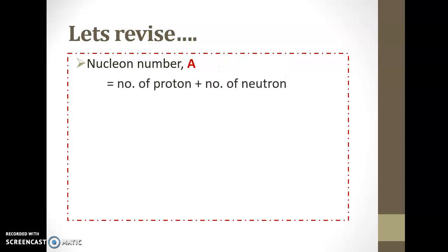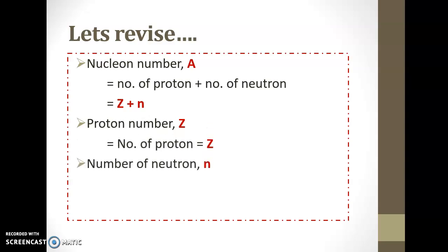We have learned before that A, the nuclear number, consists of the combination of proton Z and neutron N. Proton number Z will be given in the periodic table or in your yellow page. And neutron number can be calculated by deducting the proton number from the nuclear number.